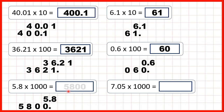Our answer is 5,800 — with the decimal point at the end we have a whole number. That answer makes sense because 5 times 1000 is 5,000 and 6 times 1000 is 6,000, so because 5.8 is between 5 and 6, our answer is between 5,000 and 6,000.